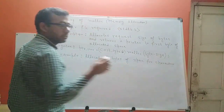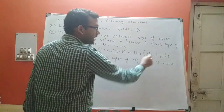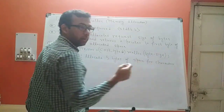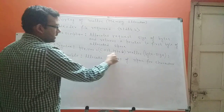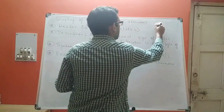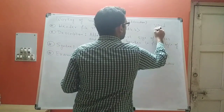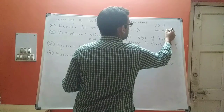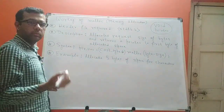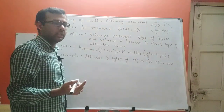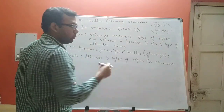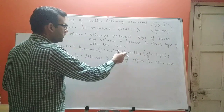If I want three bytes of memory, I pass the value three. Now, what is this cast type? Malloc by default returns a void pointer — remember, malloc will always return a void pointer. The problem with void pointers is they cannot be dereferenced, so we have to typecast the void pointer to change its type to suit our needs.